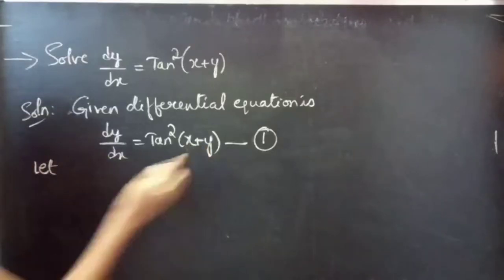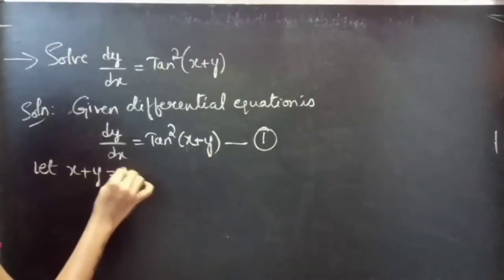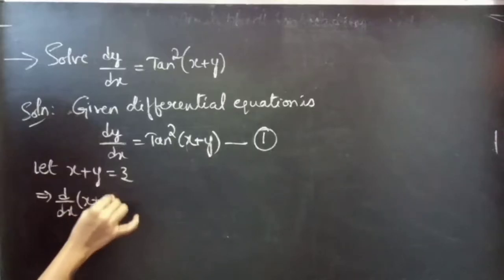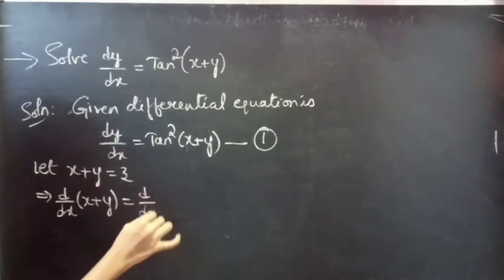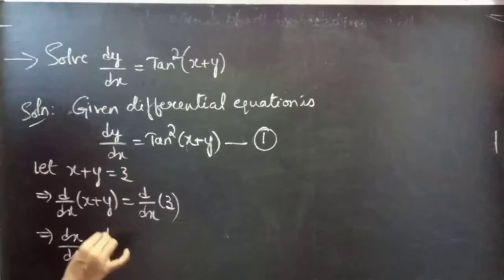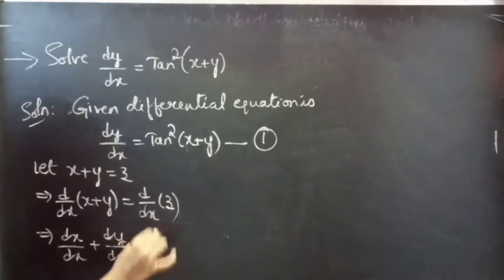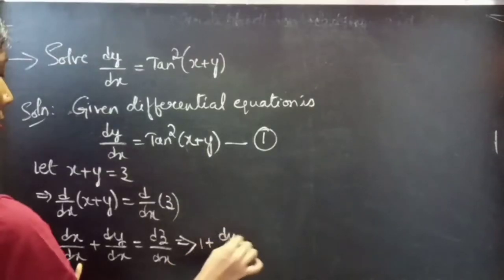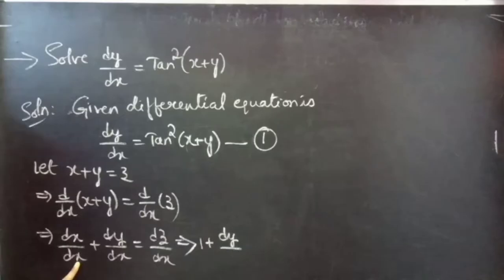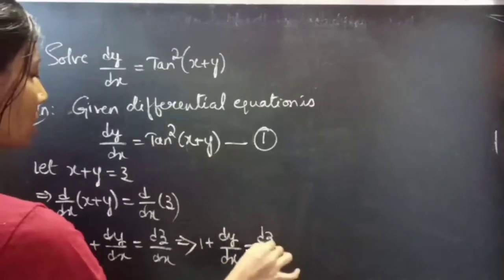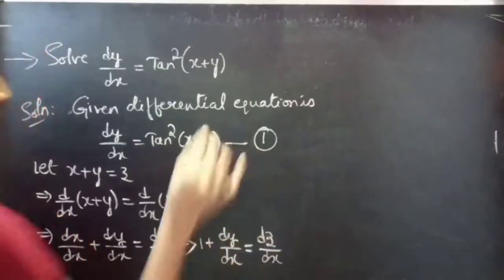Let x plus y equals to z. Now, differentiate on both sides with respect to x. Then, d by dx of x plus y equals to d by dx of z. So, dx by dx plus dy by dx equals to dz by dx. The derivative of x with respect to x is 1, plus the derivative of y with respect to x equals to dz by dx.